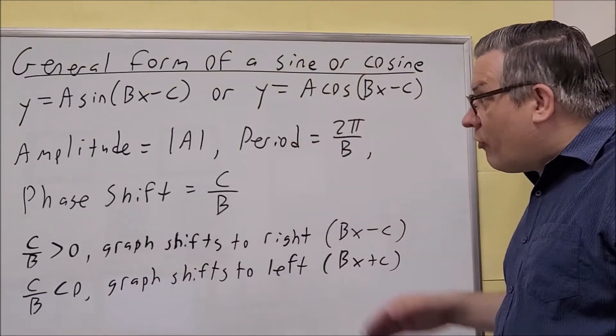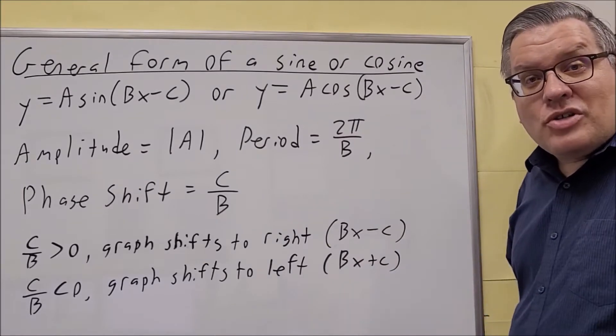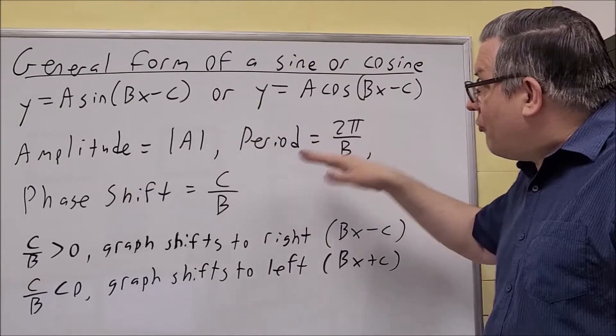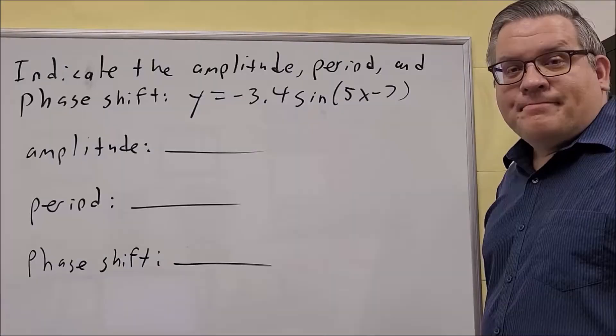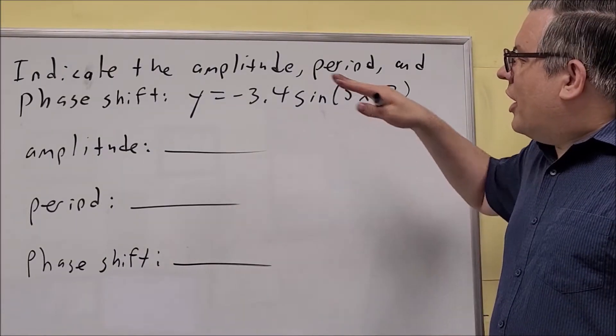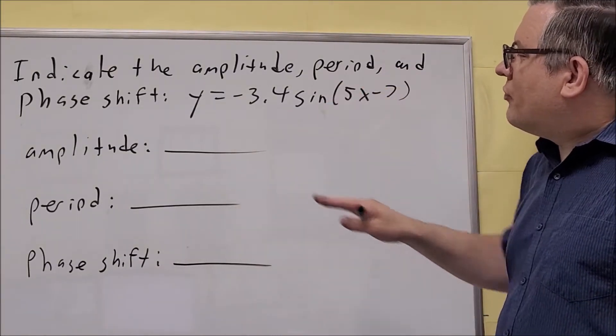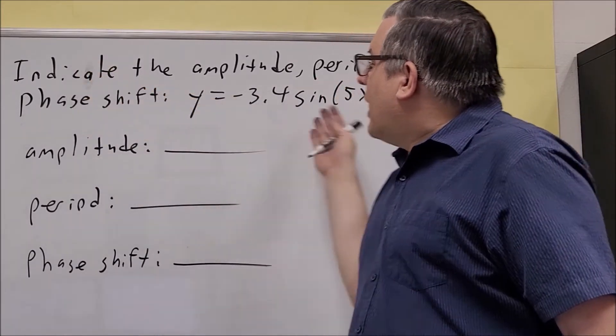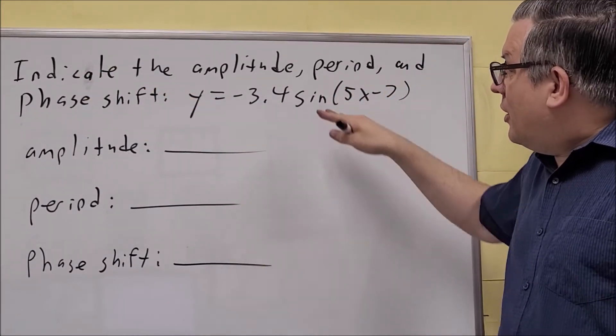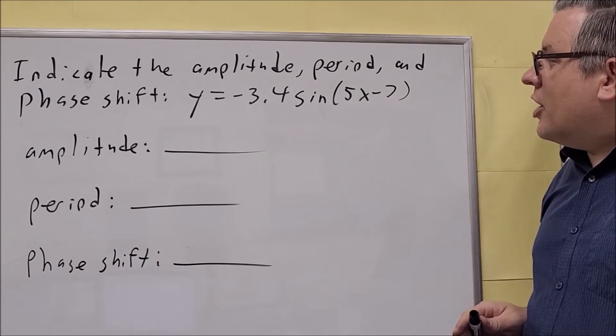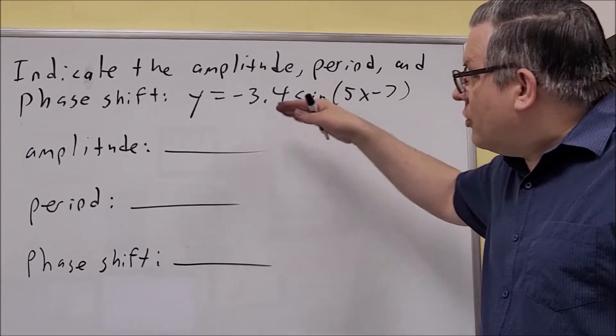So now that we've gone over all this, let's go through a couple of examples where we're just plugging things into the formulas and figuring out what this is. Okay, for this first example, we're going to find the amplitude, period, and phase shift only. We're not doing any graphs on this at all. Just taking this off of the equation itself. So let's go ahead and do that.